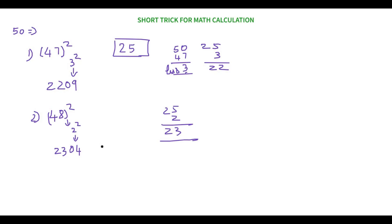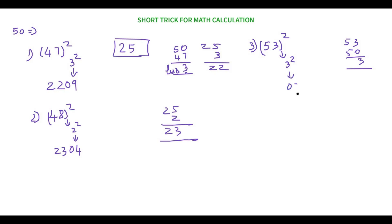What if the number is more than 50, like 53? Now instead of subtracting, we add. 53 minus 50 equals 3, so it's 3 more than 50. Three square is 09. Since it's 3 more, we add 3 to 25 to get 28. Our answer is 2809.